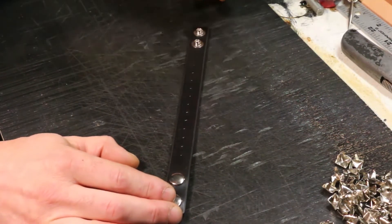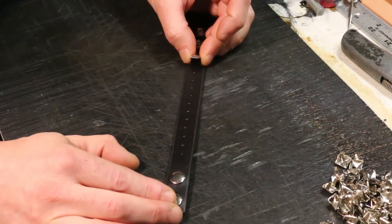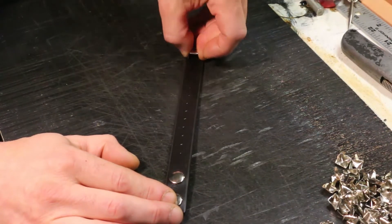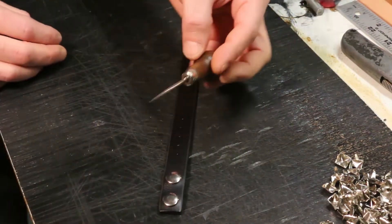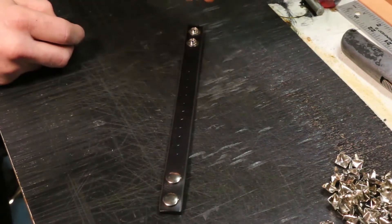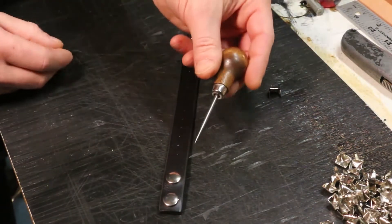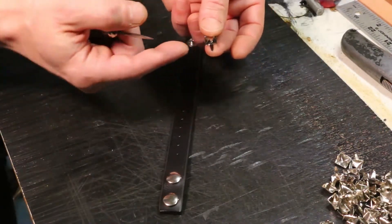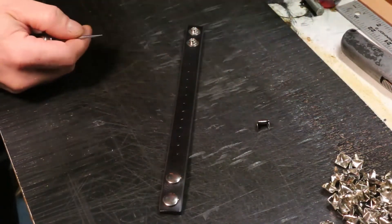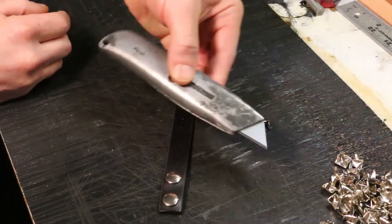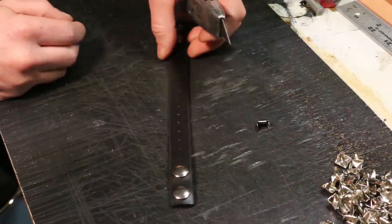Now the big difference between this technique that I'm showing you and the previous one, in the previous method we used an awl to penetrate through the leather and prepare it for the prongs. We're not going to use an awl. The awl is rounded, prongs are flat and wide, so we want something that sort of mimics that shape and what you can actually use is just a regular straight razor blade.